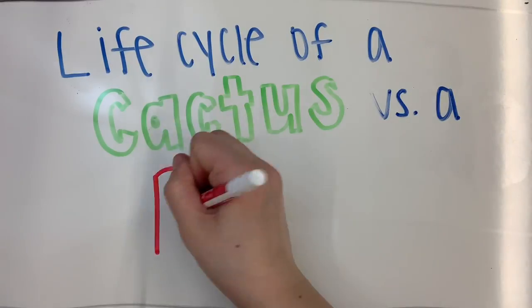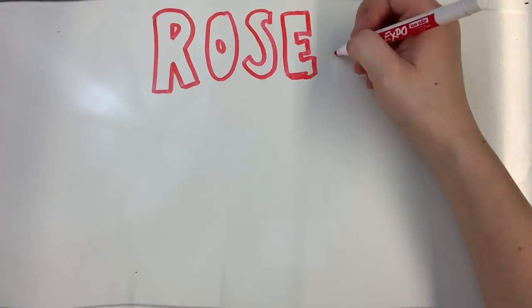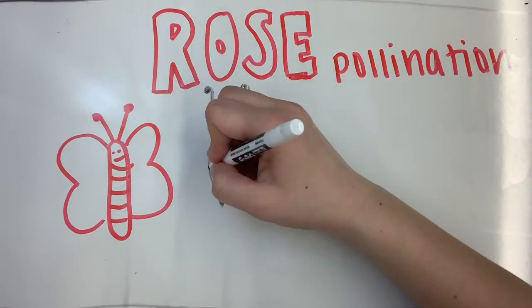Have you compared the life cycle of a rose and a cactus? The rose is pollinated by insects such as butterflies and wasps and can also be pollinated by a hummingbird.